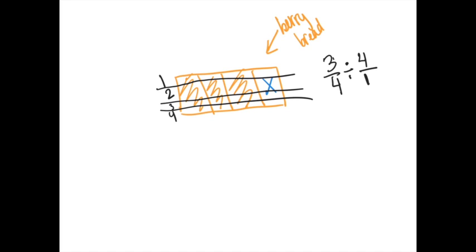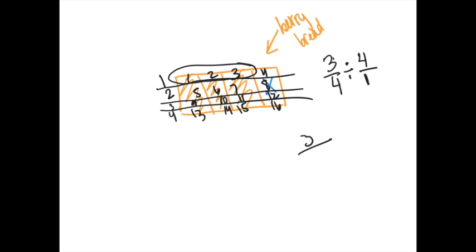So then we look at how much the top person has — they have one, two, three pieces out of a total of how many pieces? Counting all sections including the missing quarter, we get sixteen total pieces. So one person is going to get three-sixteenths of berry bread, which I think is okay, because we're going to have plenty of other food too.